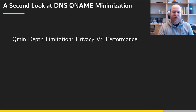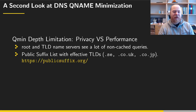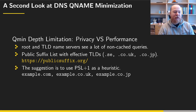We also discuss the trade-offs between privacy and performance with respect to minimizing queries. Since root and TLD name servers see many non-cached queries, it makes sense to minimize the data observable at those levels. We found a public suffix list with effective TLDs covering both single and multi-label TLDs, and we propose using this list as a heuristic for when to stop minimizing queries — for example, stopping at PSL+1 such as example.com or example.co.uk, depending on the effective TLD.